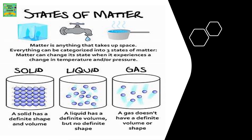Let's differentiate between these three. A solid has a definite shape and volume. A liquid has a definite volume but not a definite shape — for example, water. It has a definite volume but takes up the shape of any container you pour it in. A gas doesn't have a definite volume or shape.